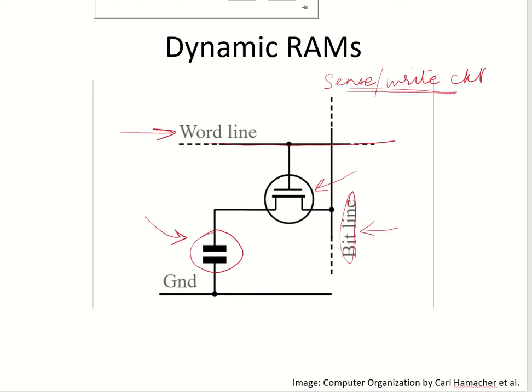Dynamic RAMs are mostly used in implementation of the main memories or the physical memories, while static RAMs are used mostly for caches and processor registers.